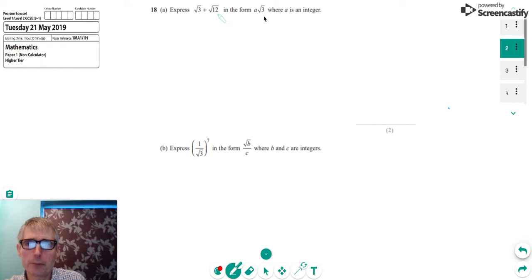We're asked to express root 3 plus root 12 in the form A root 3 where A is an integer. So we've got to try and simplify this. Now the root 3 we can't do anything with, so I'm going to keep that as root 3. But the root 12 we can write as the product of two roots. So we can say that that's going to be plus root 4 times by root 3. And that's useful because we know what the square root of 4 is. It's actually 2.